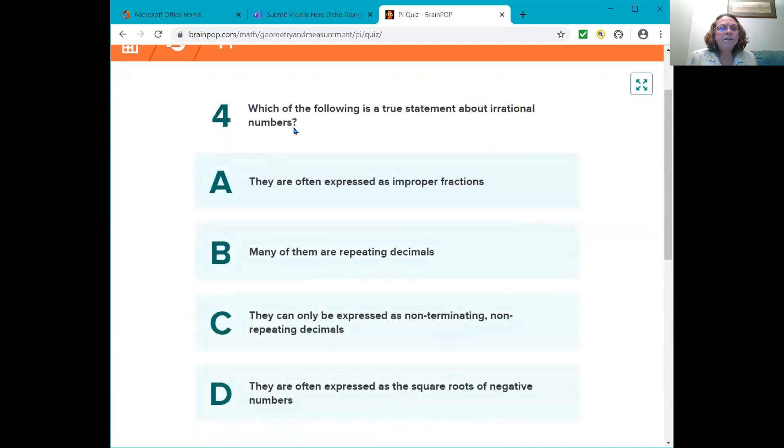Question four. Which of the following is a true statement about irrational numbers? A, they are often expressed as improper fractions. B, many of them are repeating decimals. C, they can only get expressed as non-terminating, non-repeating decimals. Or D, they are often expressed as the square roots of negative numbers. And the answer to that one is C, they can only be expressed as non-terminating, non-repeating decimals. That's an irrational number.